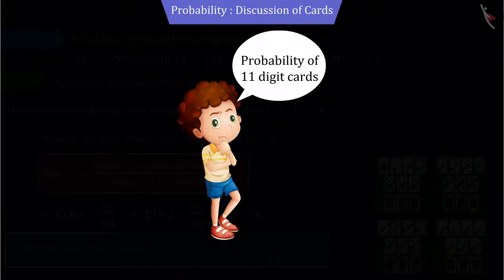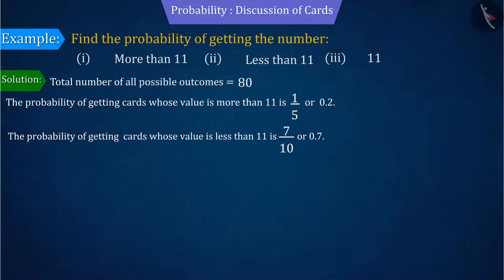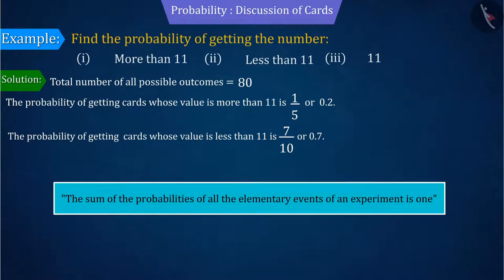So can you tell without counting the deck of cards, what will be the probability of getting a card with 11? We know that the sum of the probabilities of all the elementary events of an experiment is 1.